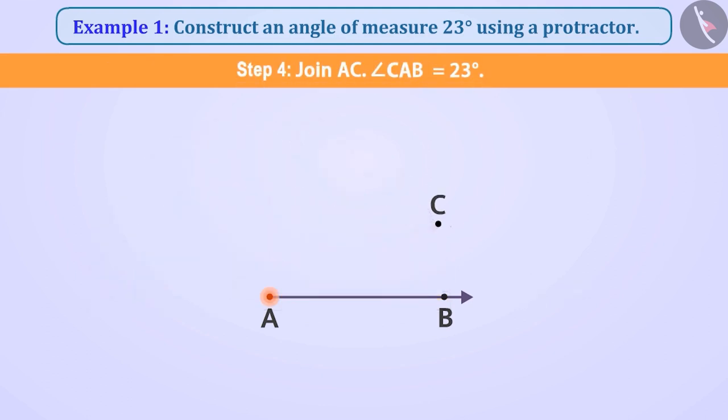Step 4. Now we will draw line AC starting from point A and going from point C. Now we have constructed the angle CAB measuring 23 degrees.